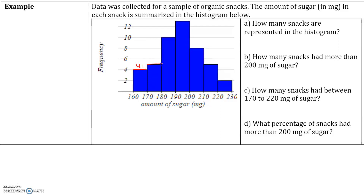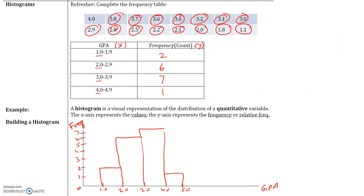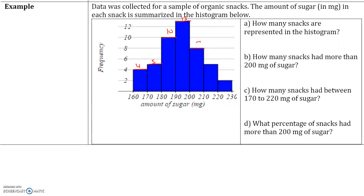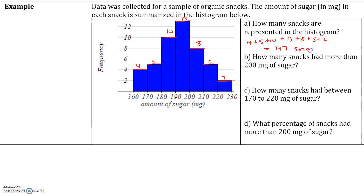Between 170 and 180, the bar is between 4 and 6, so it's 5. Between 180 and 190, we have 10 snacks. Between 190 and 200, we have 13 snacks. Then we have 8 snacks between 200 and 210. Between 210 and 220, the bar is again between 4 and 6, so we have 5 snacks. And we have 2 snacks between 220 and 230. So the total is 4 + 5 + 10 + 13 + 8 + 5 + 2, which gives us a total of 47 snacks.